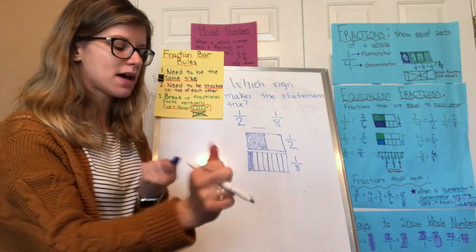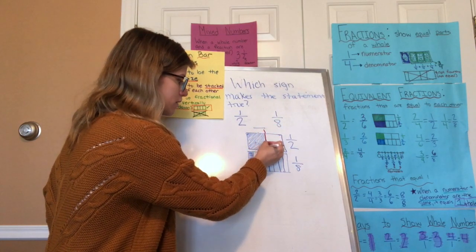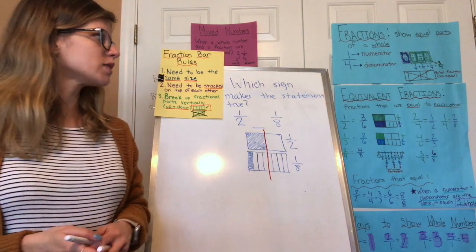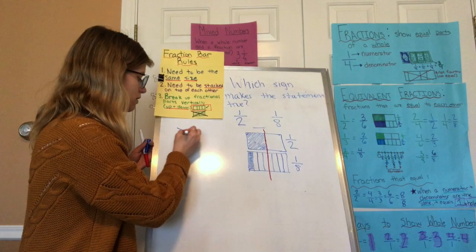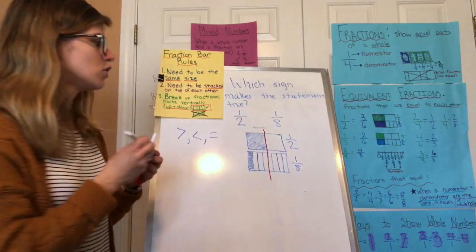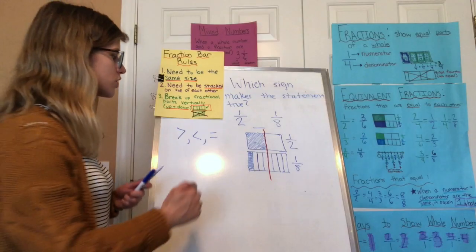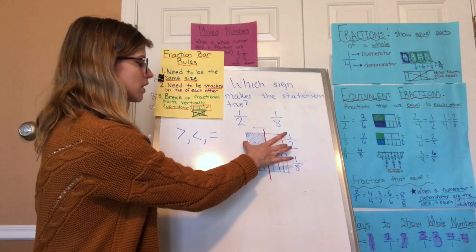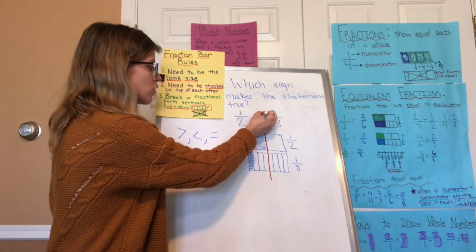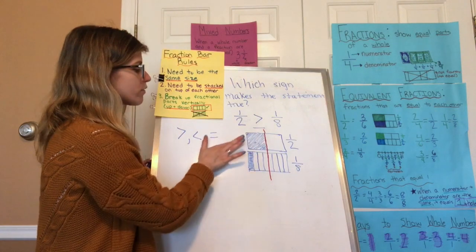I draw my line straight down where 1/2 ends to see what sign makes the statement true. I see that 1/2 has more filled in than 1/8, so that means it's greater than. My alligator mouth or greater-than symbol faces toward the bigger fraction, which is 1/2. So 1/2 is greater than 1/8.